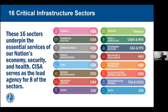There are 16 critical infrastructure sectors listed here. CISA is actually the lead agency for eight of the 16 sectors, with other federal agencies leading the rest. These sectors underpin the essential services of our nation's economy, security, and health. Each agency also has what we call a sector risk management agency, identified in Presidential Directive 21, which connects sector experts with government to identify resources needed to protect and improve organizations. Anytime we want to make change through Congress, it generally comes up through the sector risk management agency.